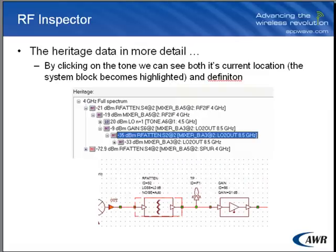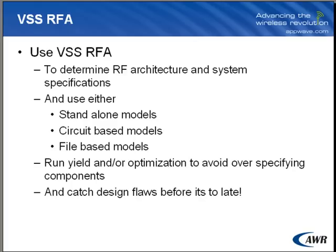Here's a clearer image of what happens when you double-click on a spur — you can actually get to the device that caused that spur. In essence, I hope this demonstration showed you that you can use the VSS RFA tool to avoid over-specifying components and catch design flaws before it's too late.